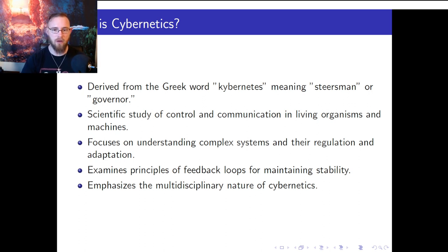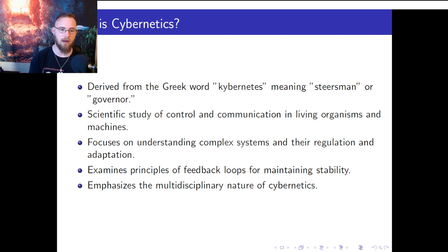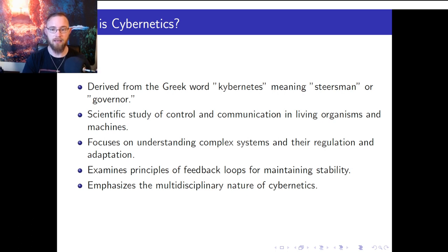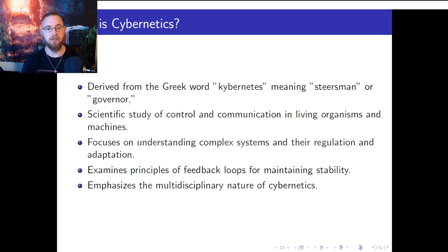In the first chapter, Ashby begins by defining cybernetics, derived from the Greek word meaning steersman or governor. Cybernetics is the scientific study of control and communication in both living organisms and machines, and really systems in general. It seeks to understand how complex systems are regulated and how they can adapt to their environment. Cybernetics examines the principles of feedback loops, which are essential in maintaining the stability of systems. These loops can be found in various fields such as biology, engineering, and economics.